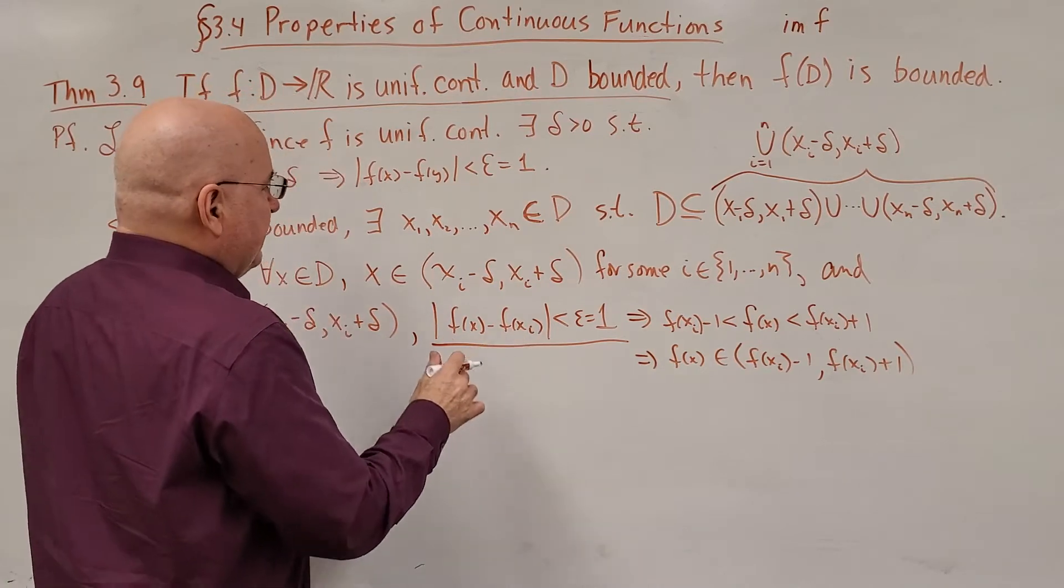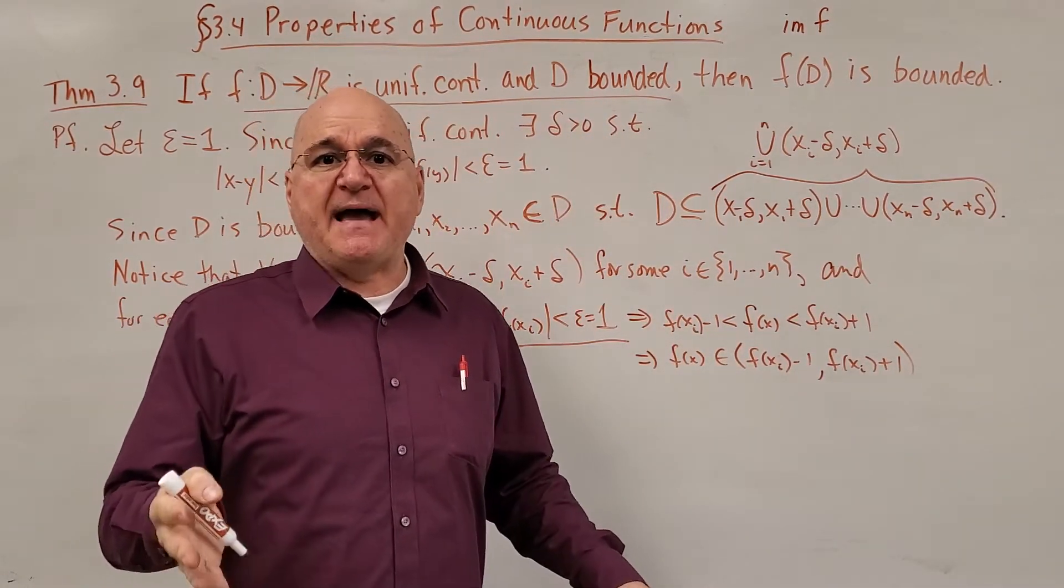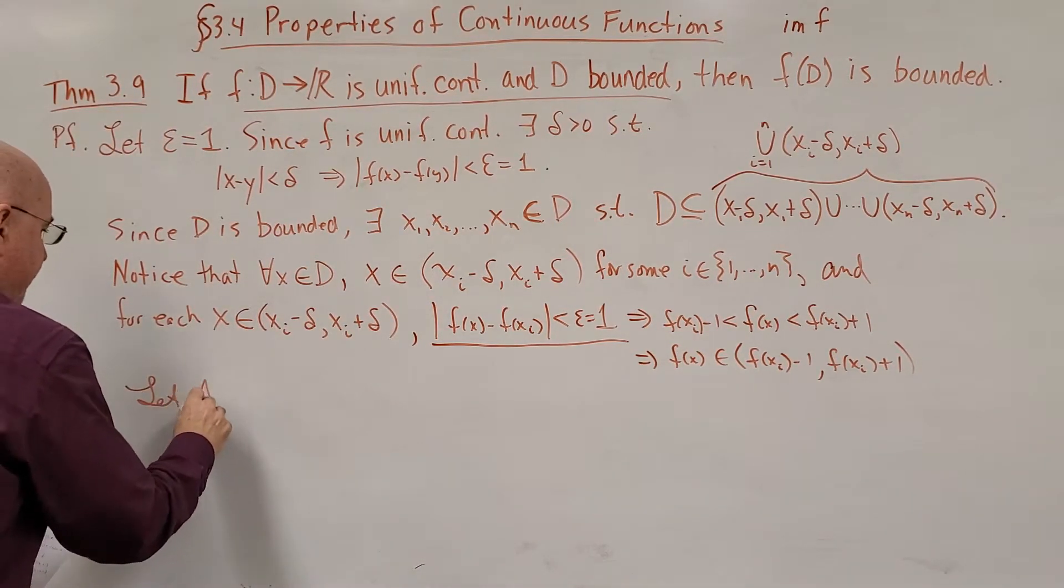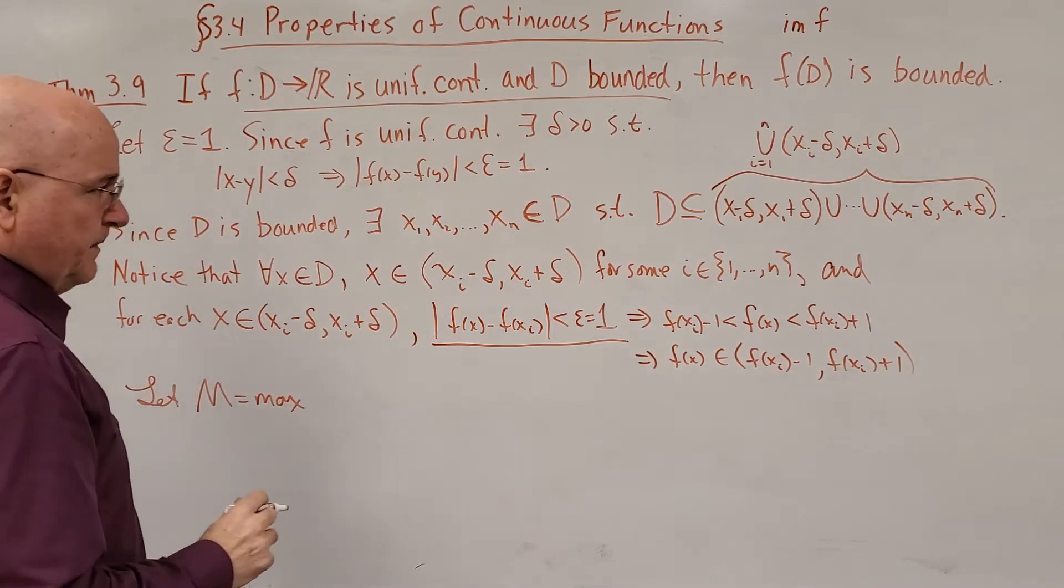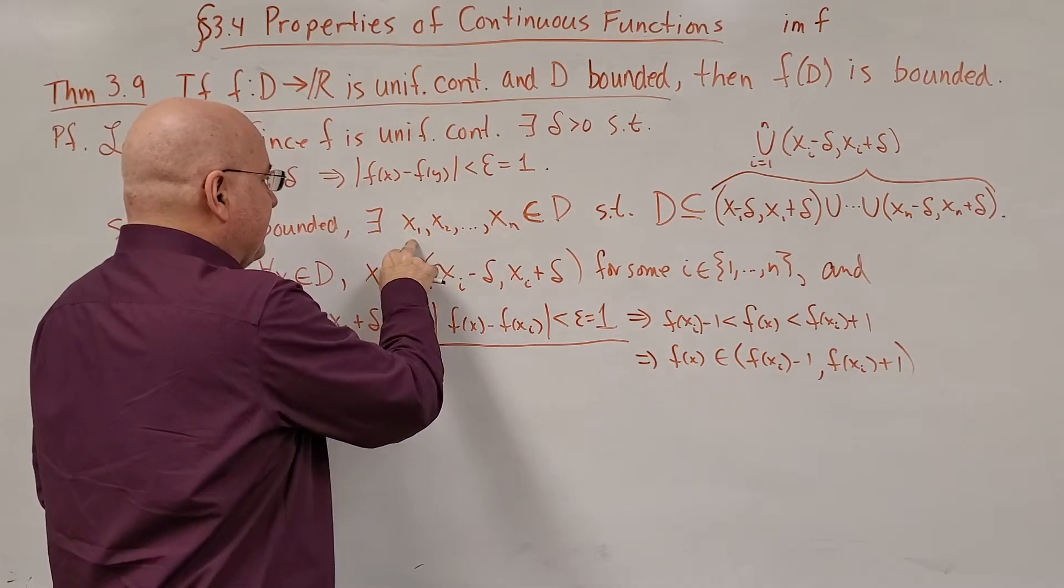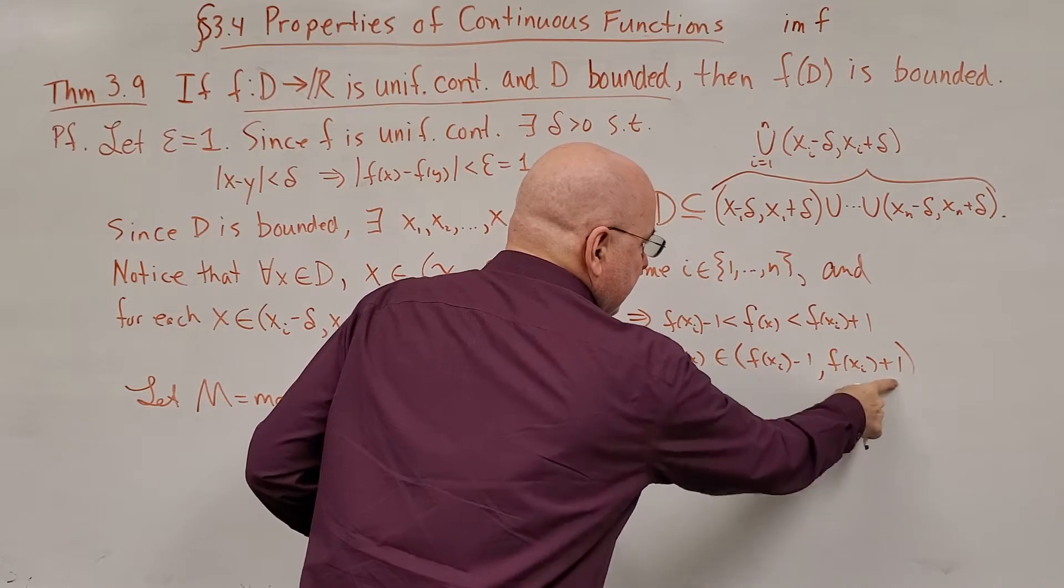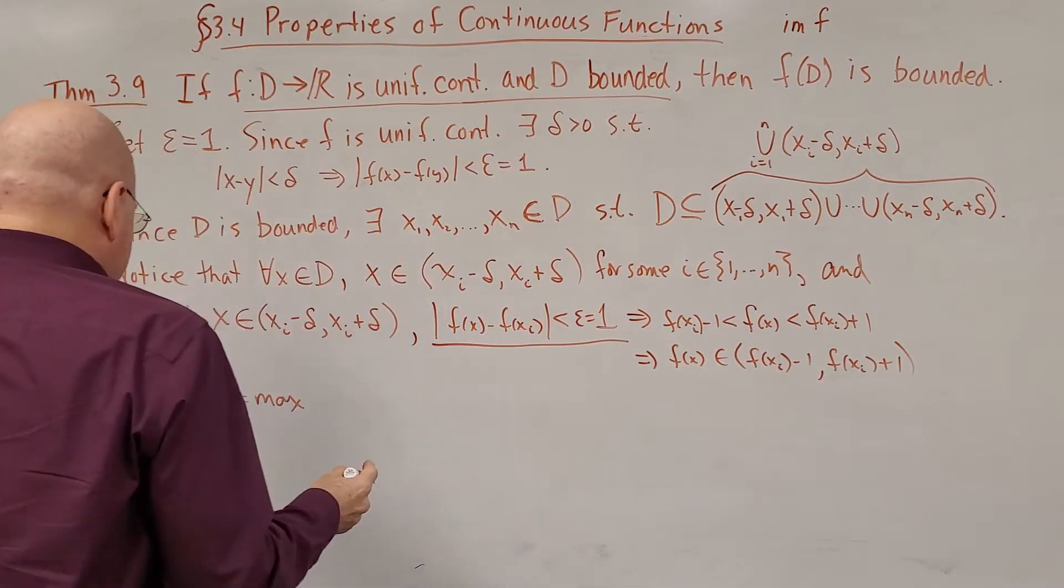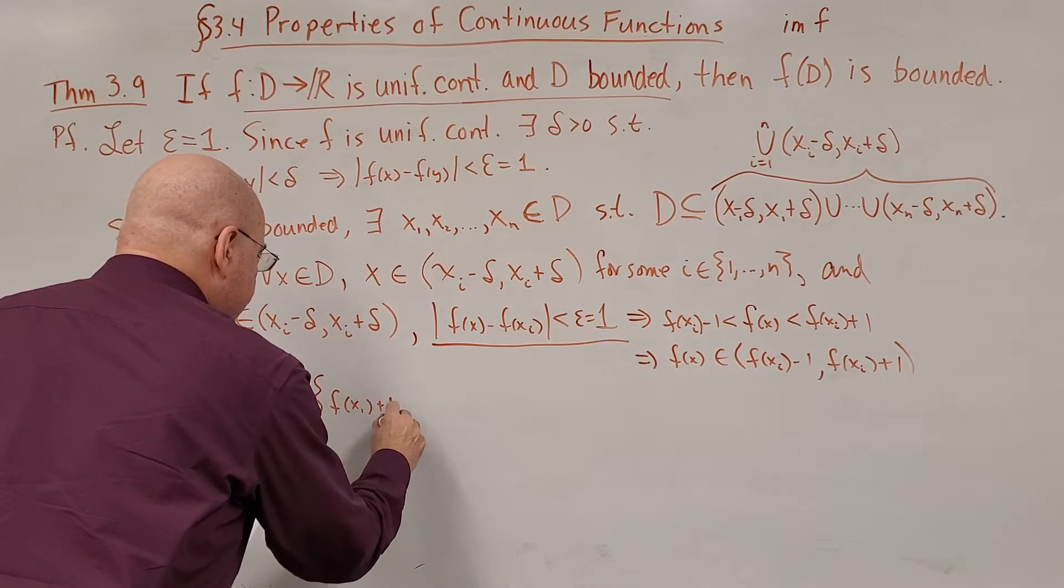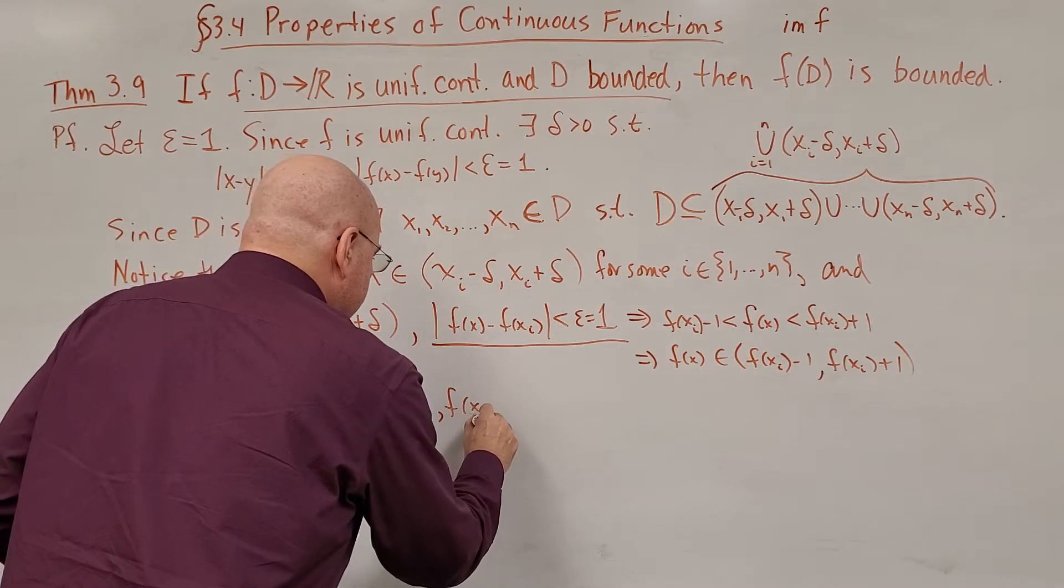Well, we only have n of these points. We only have n of these intervals. That's a finite number. We can take a maximum and a minimum. So what I'm going to define is let's let capital M be the maximum of not the f(xᵢ)'s, f(x₁), f(x₂) up to f(xₙ) but f(xᵢ) + 1. So like the maximum of these numbers for each of the n intervals. So I will write that like f(x₁) + 1 and f(x₂) + 1, f(x₃) + 1 all the way up to f(xₙ) + 1.